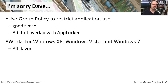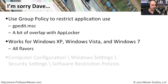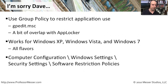AppLocker, as you'll find in the next video, only works in Windows 7 Ultimate and Windows 7 Enterprise. It doesn't work on Windows Vista, Windows XP, or some other flavors of Windows 7. So you may find yourself using both of these to administer and manage the applications that run on your computers.